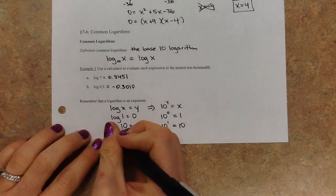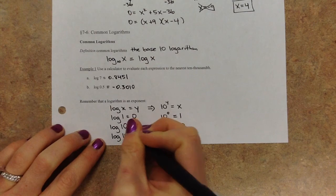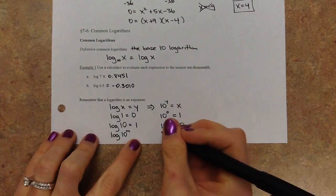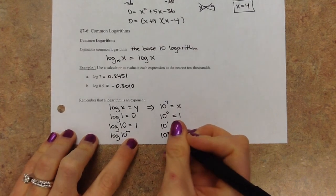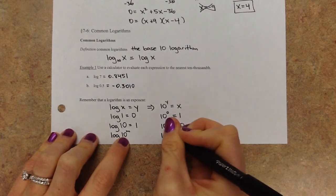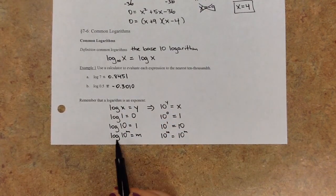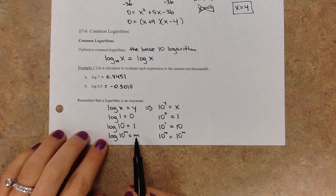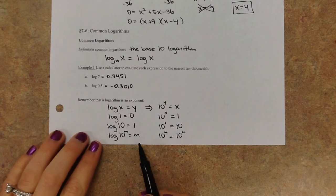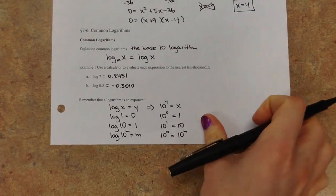We could do really anything — like log of 10 to the m. So 10 to what power gives us 10 to the m? That would be the m power, so this equals m. Therefore, the log of 100 would be 2, the log of 1,000 would be 3, the log of 10,000 would be 4, and so on. It's just a missing power any time you are looking for a log.